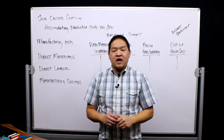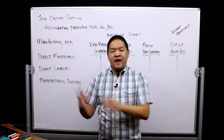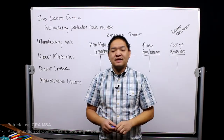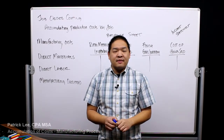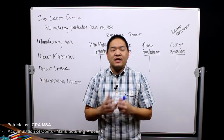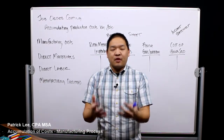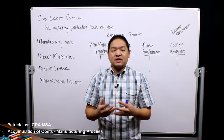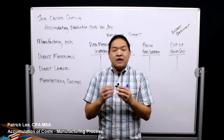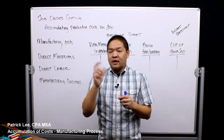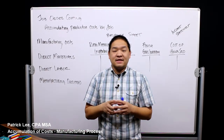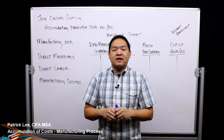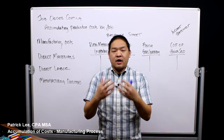In this lesson we're going to talk about the manufacturing flow of cost through the manufacturing process. In particular we're going to talk about job order costing, but we can do the same thing for process costing. When we talk about process costing we will make a few alterations, but in this lesson we're going to specifically talk about job order costing.